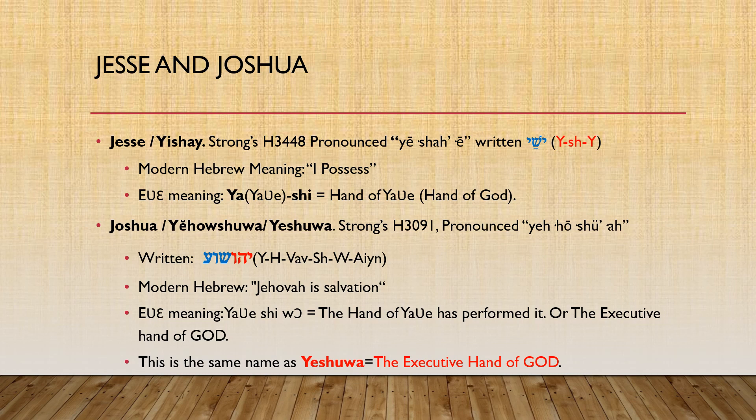They said Jesse means 'I possess.' In Ewe, Y-S-H-Y stands for Ya-Shi. The Ya is representative of Yave or Yud-He-Vav-He. So Yave-Shi means 'Hand of Yave' or 'Hand of God.'